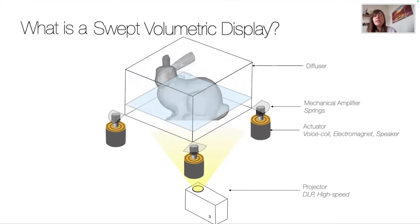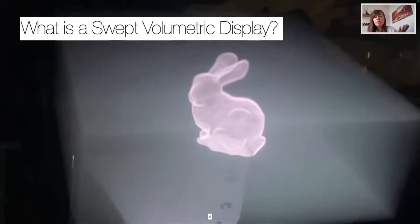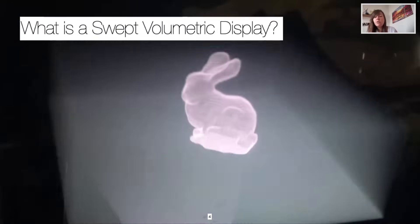It then literally sweeps the diffuser really fast so that the surface is non-perceivable by leveraging the persistence of vision to make perceive an object without perceiving the diffuser. So we can see on this video that the diffuser starts moving and we perceive a true 3D rabbit.